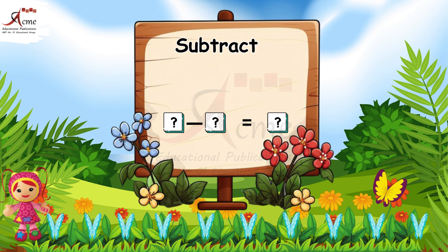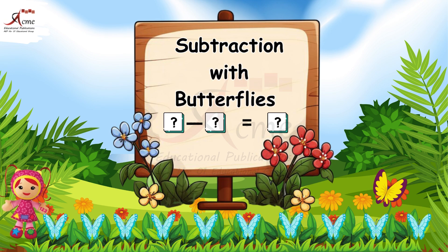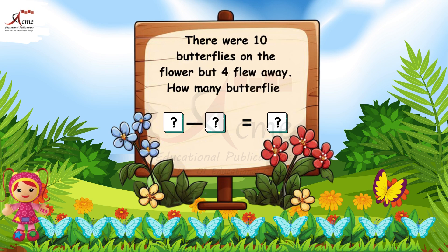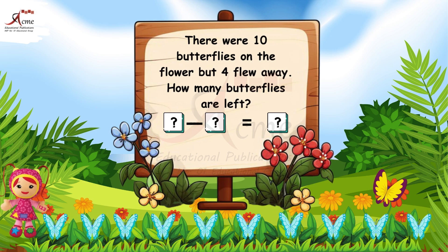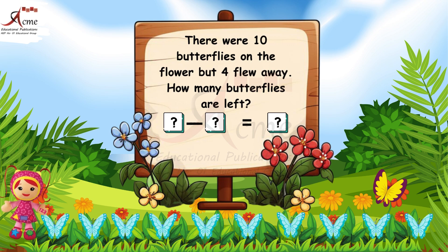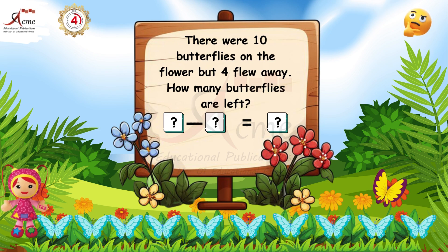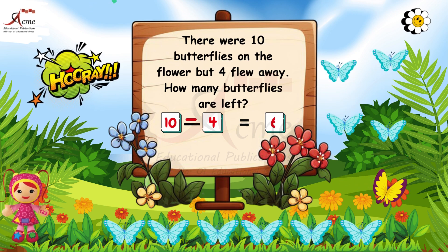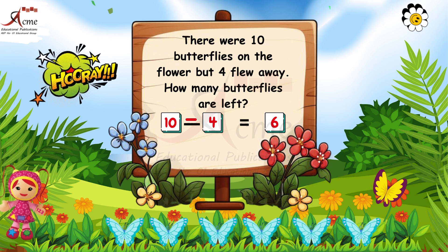Second question: Subtraction with butterflies. Now let's move on to the second question. There were 10 butterflies on the flower, but 4 flew away. How many butterflies are left? Can you count the butterflies and subtract 4 from 10? Count the butterflies — 10 butterflies minus 4 butterflies equals 6 butterflies. Yes, there are 6 butterflies left. Well done.